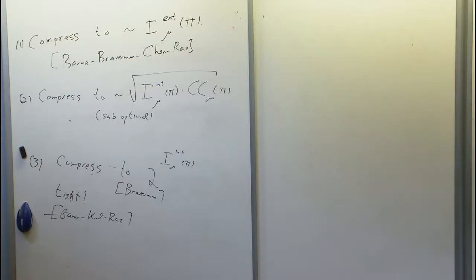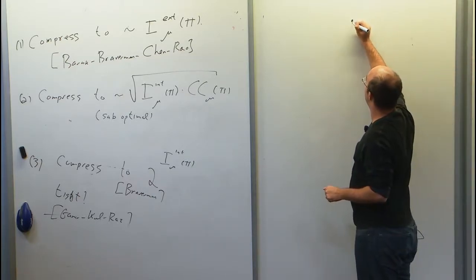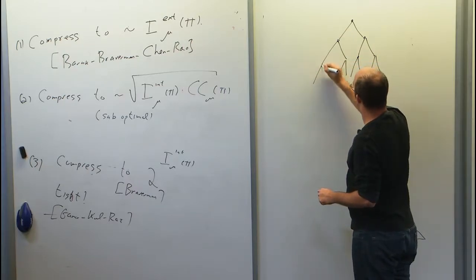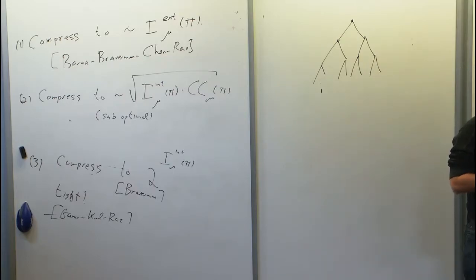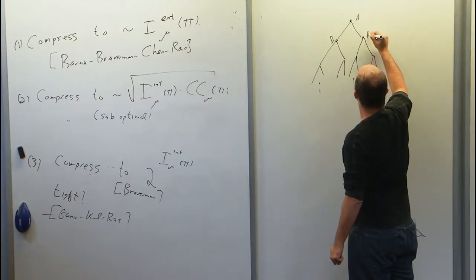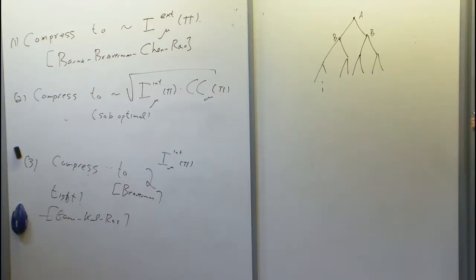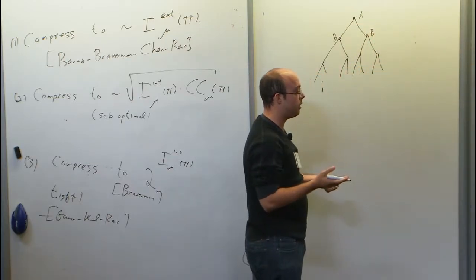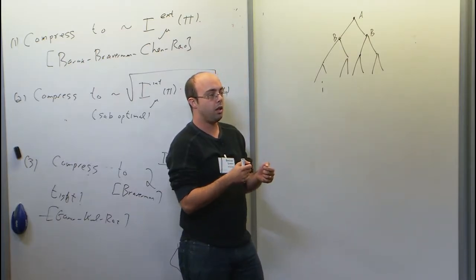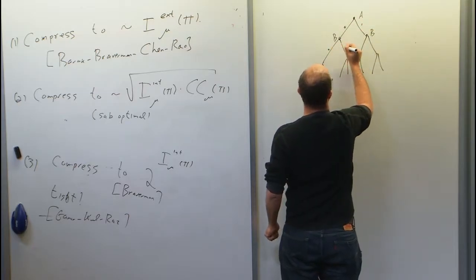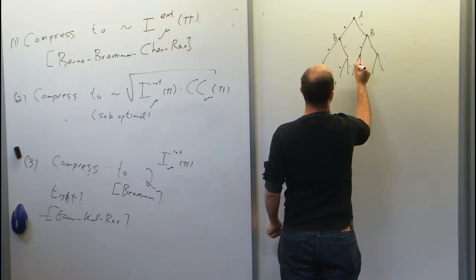We have a protocol tree where each node is owned by one of the players. In a randomized protocol, it's a binary tree — each node has two children corresponding to whether the party sends a zero or one. The edges are labeled with zero and one, and so on.